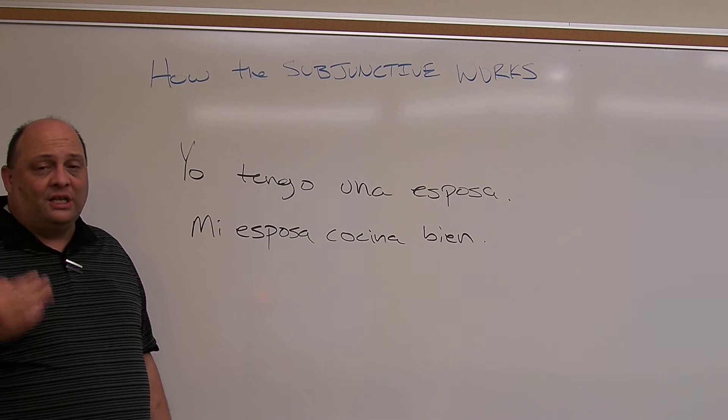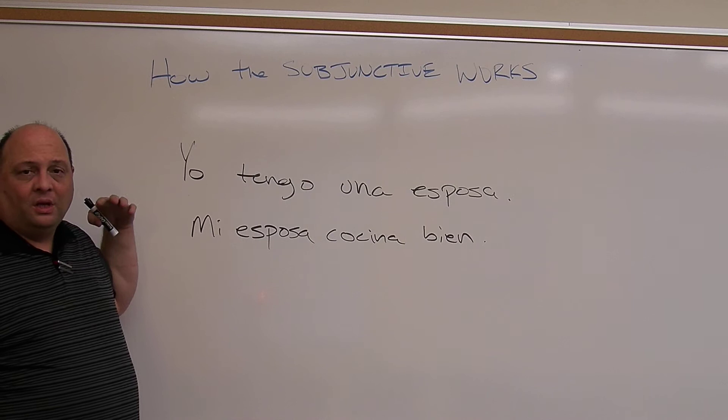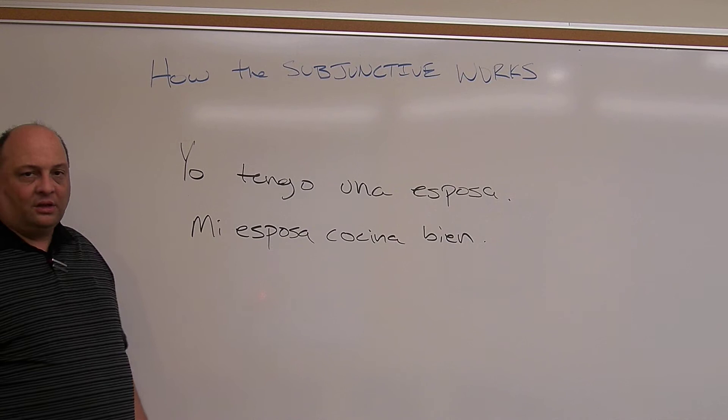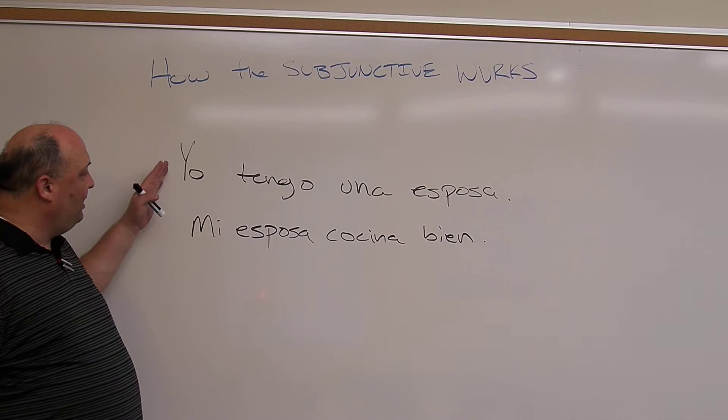There are different times when you do, and different times when you don't. So far, we've looked at simple sentences that have one subject. Yo tengo una esposa. Mi esposa cocina bien. In English, we would say 'I have a wife who cooks well.' So we could combine into one sentence two different ideas.